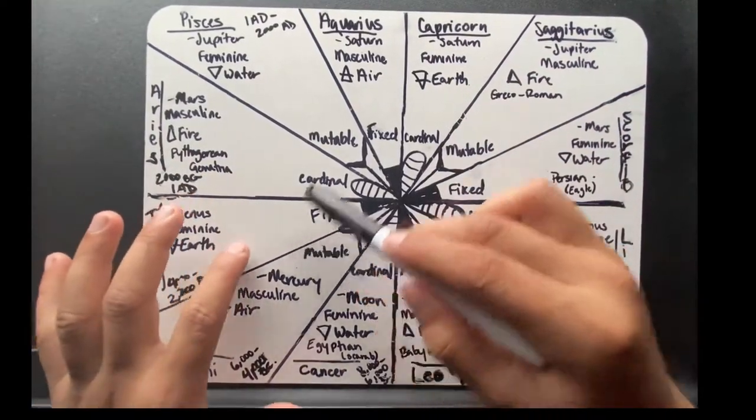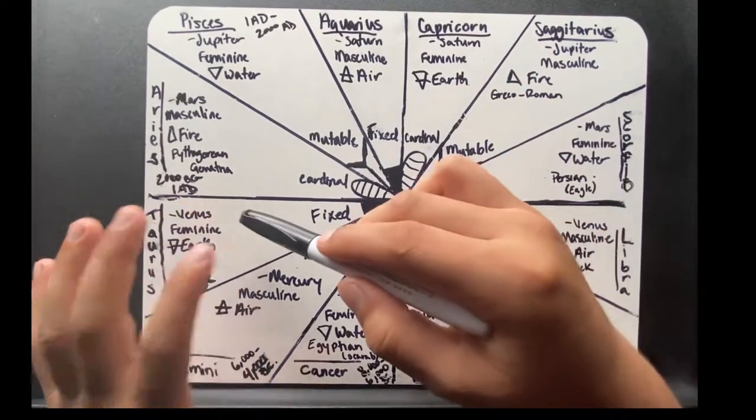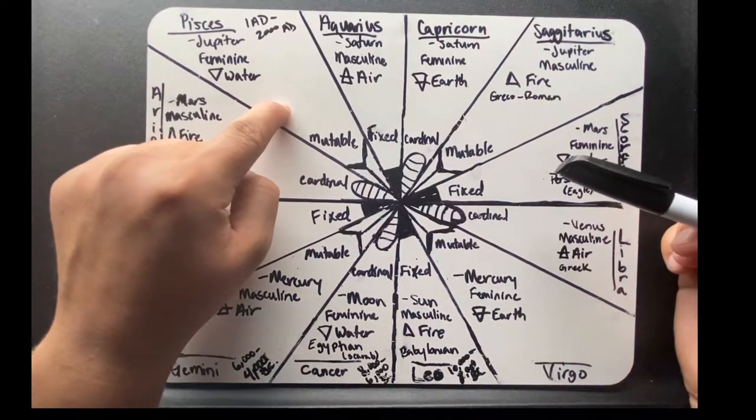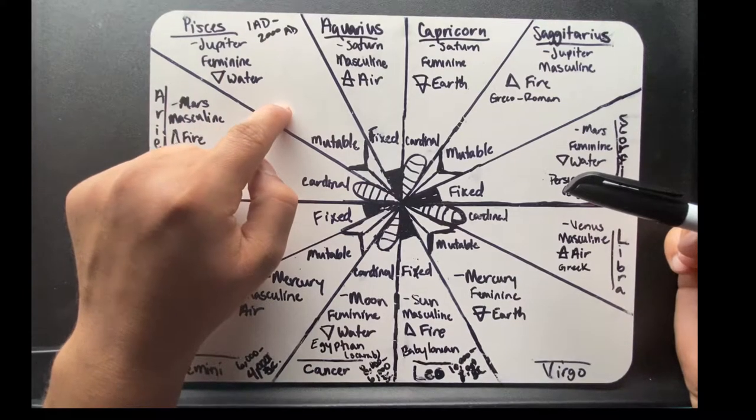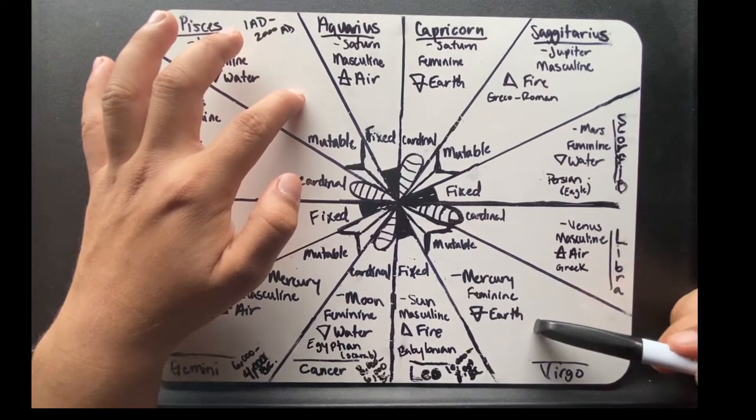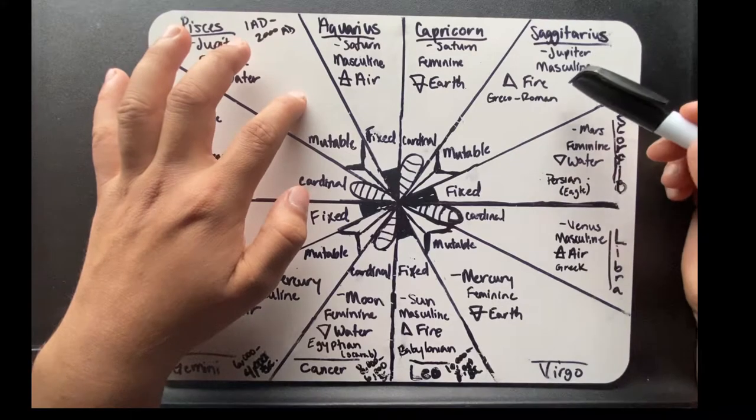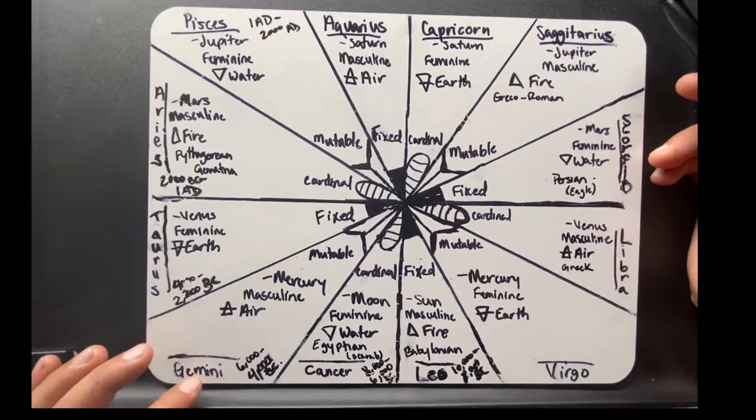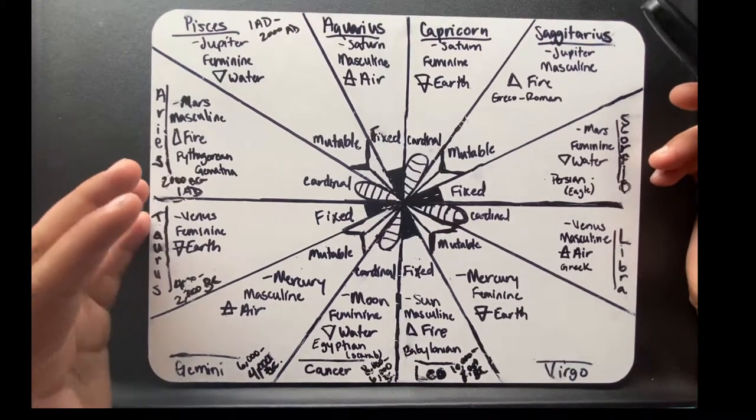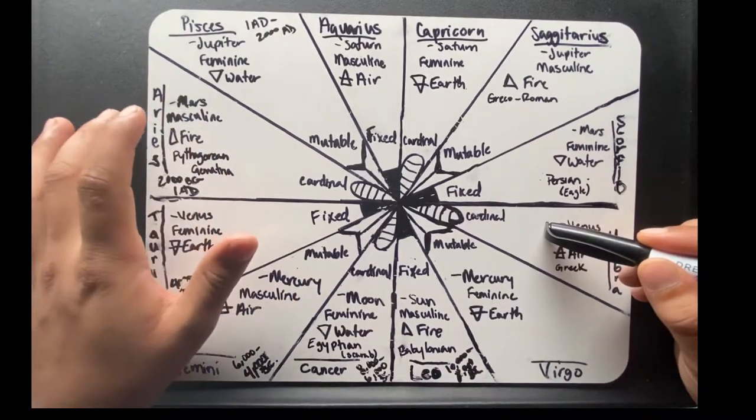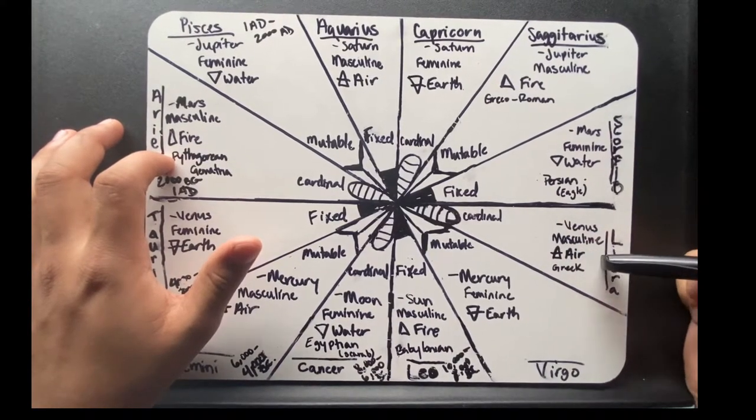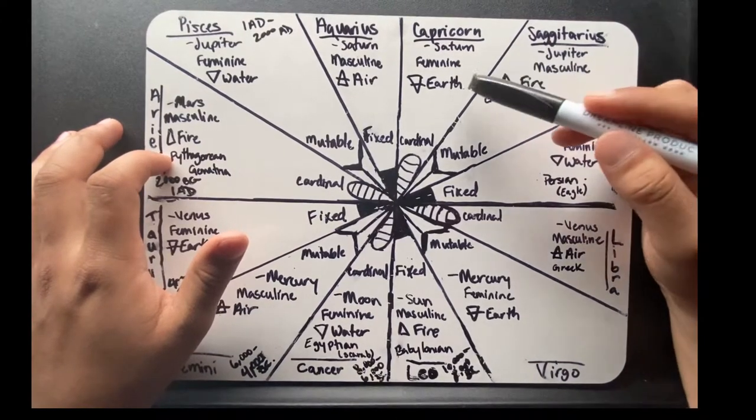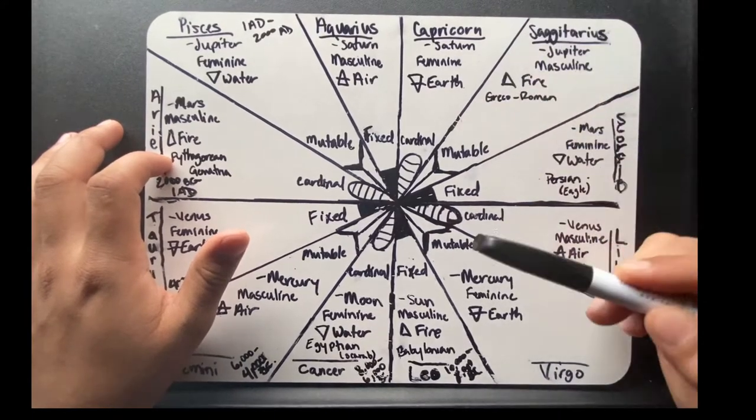Then you have Leo and Aquarius, the masculine fixed axis. Also look at how the fixed cross has one of each element: air, water, fire, earth. It's the same with the other two crosses as well. You have the mutable cross with feminine water Pisces, feminine earth Virgo, masculine fire Sagittarius, and masculine air Gemini. Finally, we have the cardinal cross with the masculine axis: fire Aries and air Libra, and the feminine axis with earth Capricorn and water Cancer.